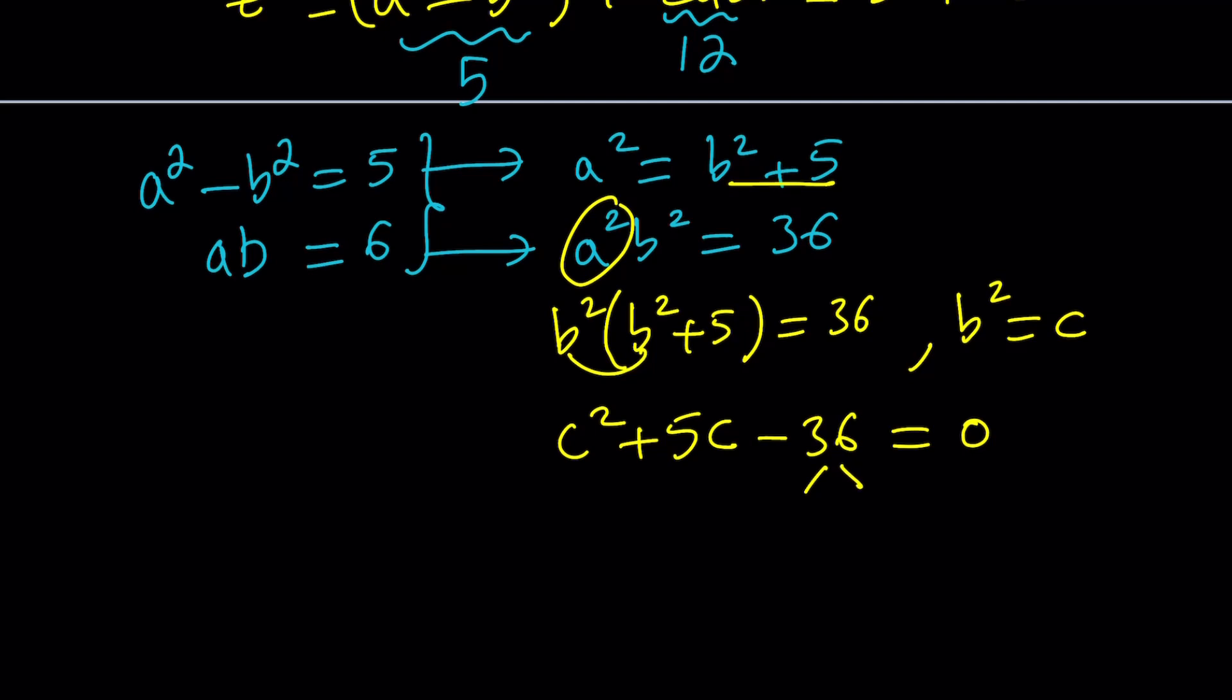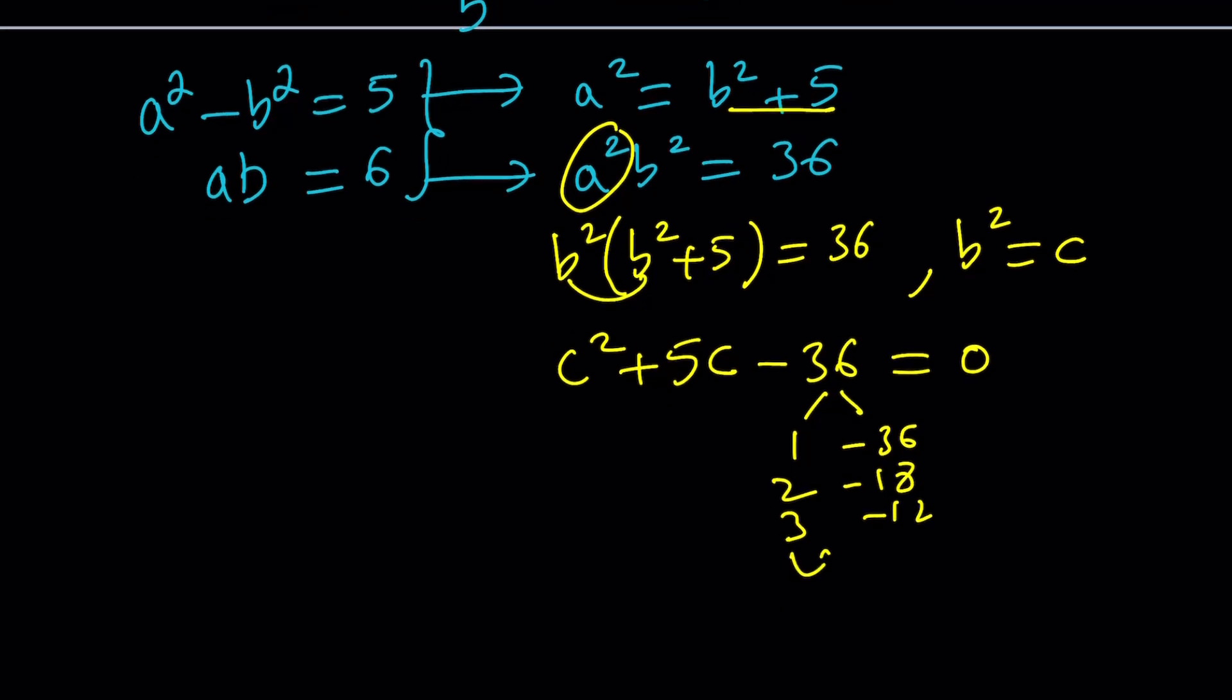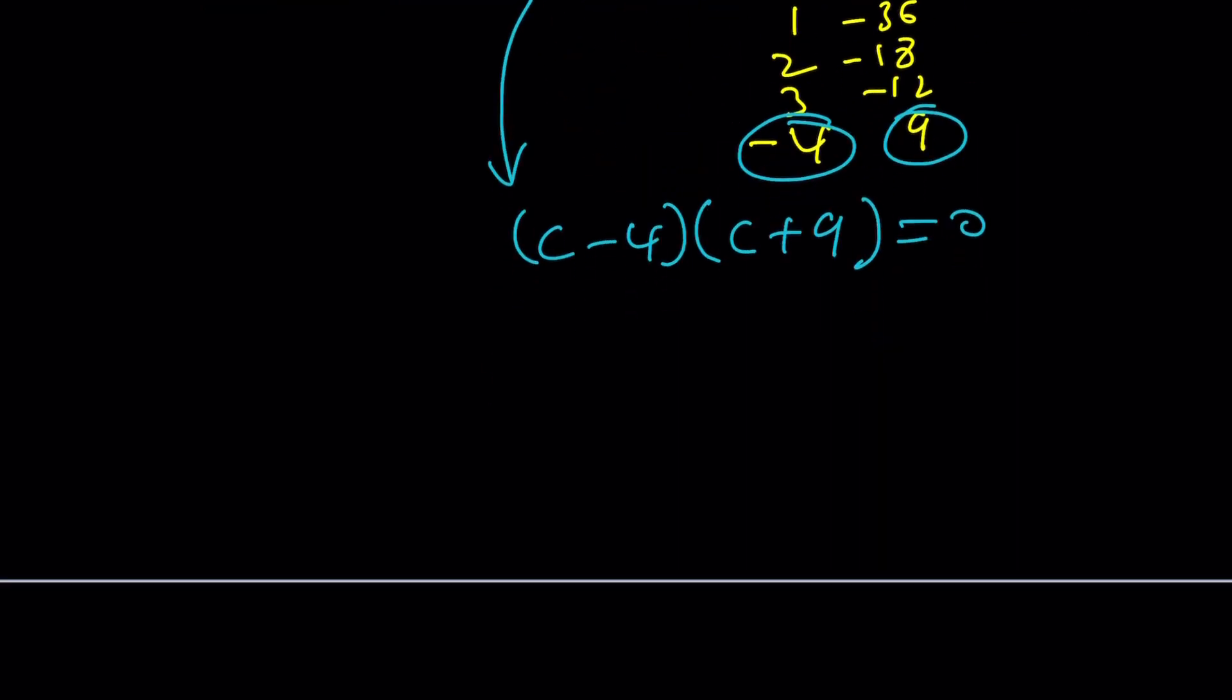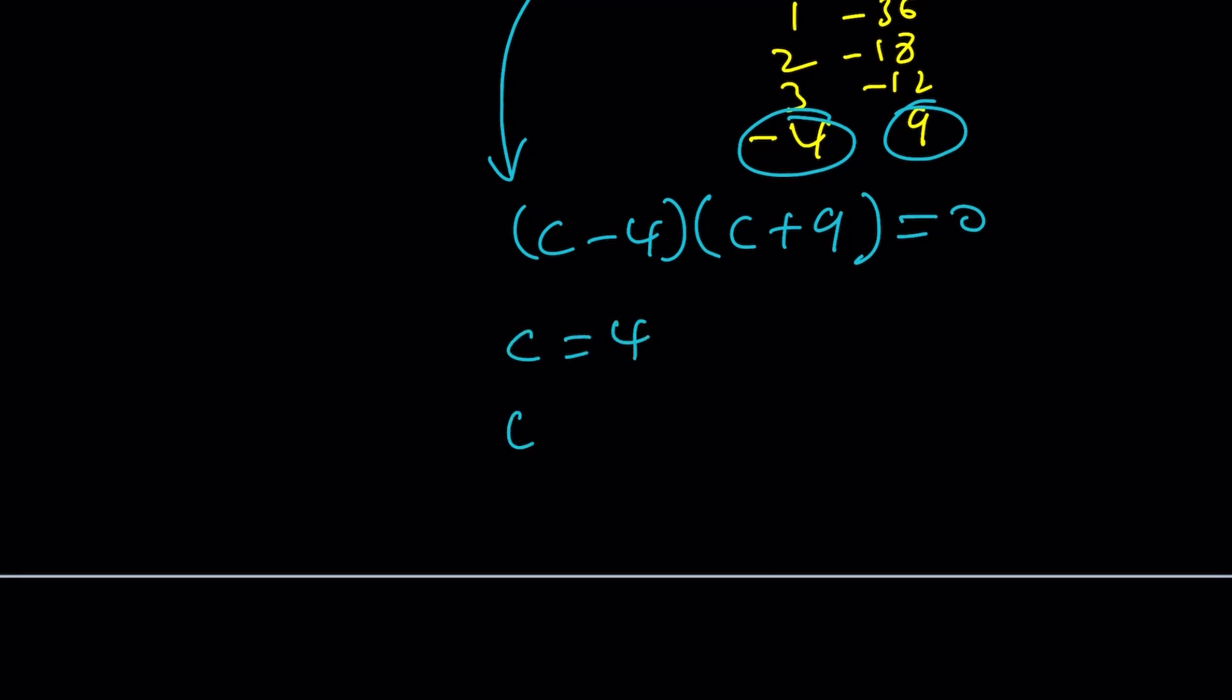Find two numbers whose product is negative 36 and whose sum is 5. If you look at factors of negative 36, those numbers are like 1 and negative 36, 2 and negative 18, 3 and negative 12, 4 and negative 9. We're trying to get a sum of 5. 4 and negative 9 give us a sum of negative 5. But we need a positive 5. Therefore, we can just switch the signs around. These are the two numbers that we've been looking for. And that gives us c minus 4 times c plus 9 equals 0.